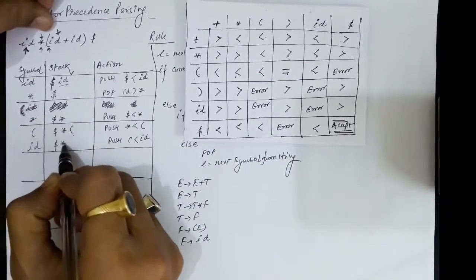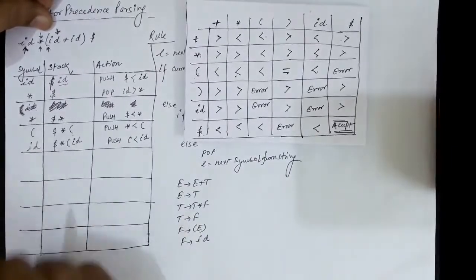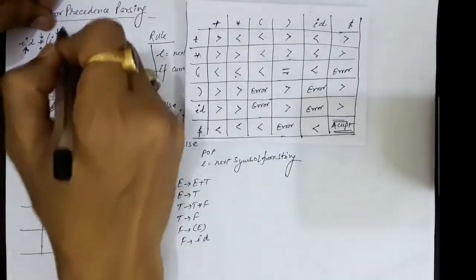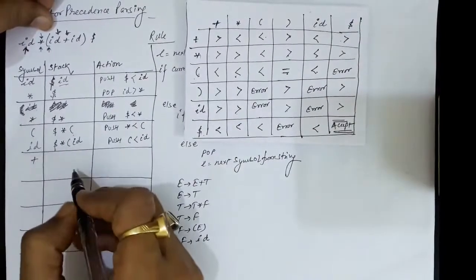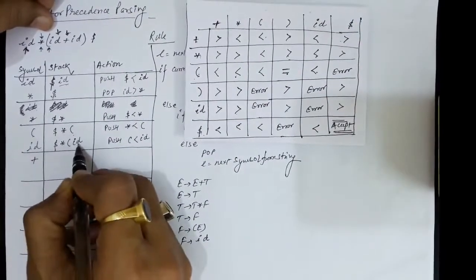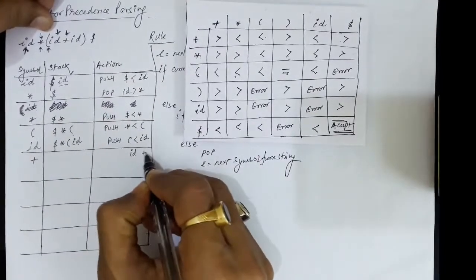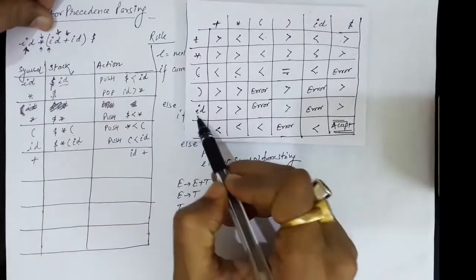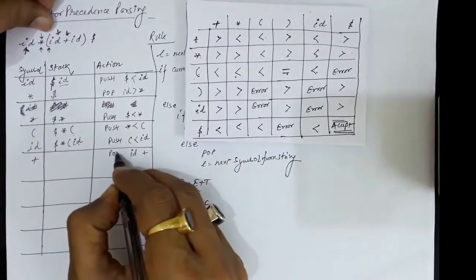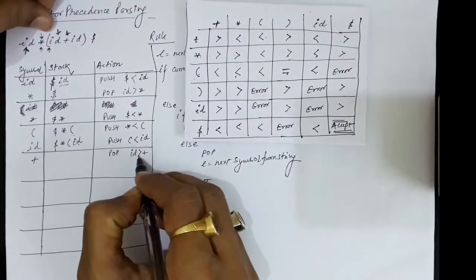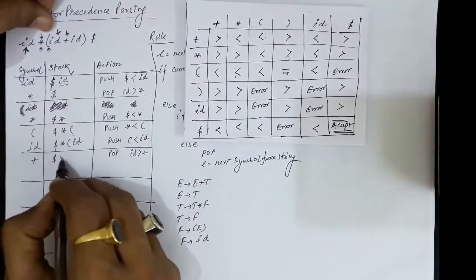The stack now contains dollar, multiplication sign, opening parenthesis, and id. Next symbol is the plus sign. We check the precedence of id over plus — id has greater precedence than plus, so we pop the stack. After popping, we remain with dollar, multiplication, and opening parenthesis.